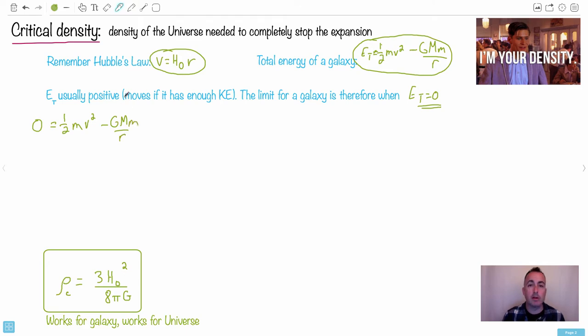So we put a minus there because it's actually negative. So that's the total energy. Now, the total energy is usually positive. That tells you if it has enough kinetic energy to actually rotate. But the limit for a galaxy, then, is when the total energy equals zero. So what we're going to do, we're going to set this whole thing right here equals zero. We're going to say, then, that zero equals one-half mV squared minus GMm over R.